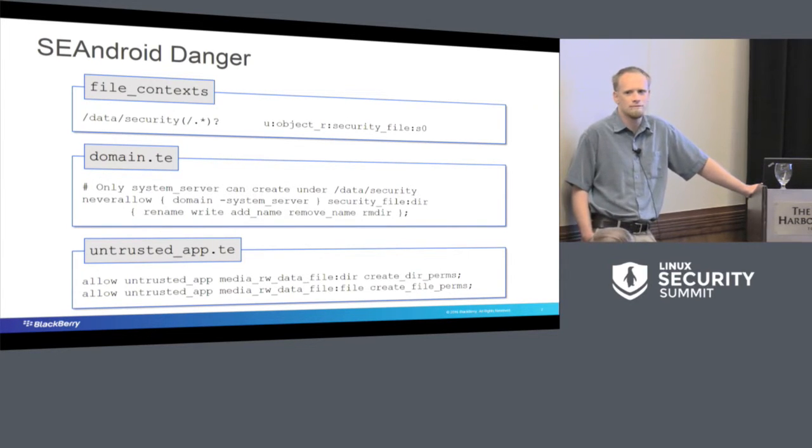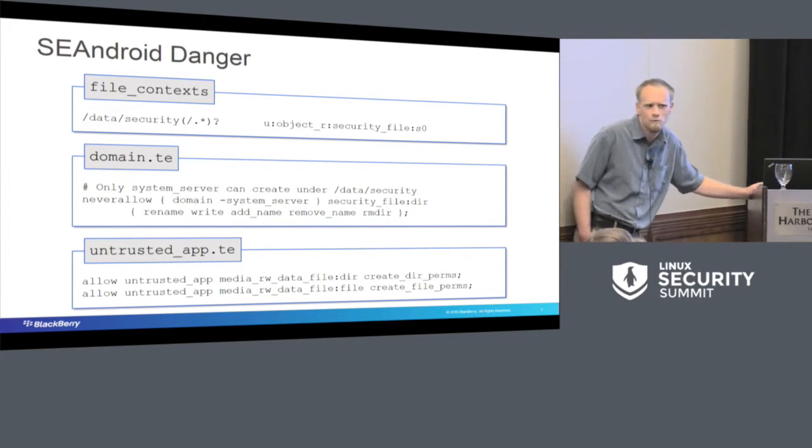Untrusted app is not one of them. However, untrusted app can read and write to media data files. This is pretty obviously something that an app might want to do. But what happens if we do have a physical attacker and we don't have DM Verity? Well, let's just update the label. Let's call that entire security directory a media read-write data file. We've all of a sudden given read-write access to all the apps on the system. Any app could then use this SE Linux policy, and that's not really what we're looking to do.